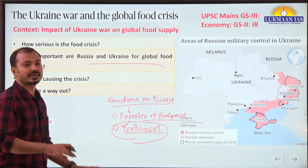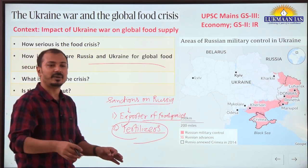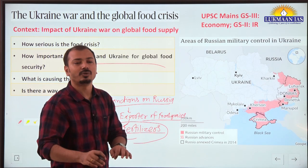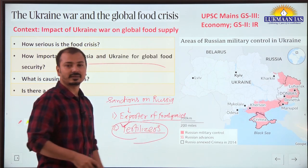Russia is also the world's largest exporter of fertilizers - an important input for agriculture around the world. Again, fertilizers are not part of sanctions, but investment in fertilizer production depends on the overall health of the economy, which is suffering, so overall fertilizer production is also coming down. The limited supply of fertilizers is making their cost very high, and India is also facing this problem as prices of fertilizers in the world market have increased.